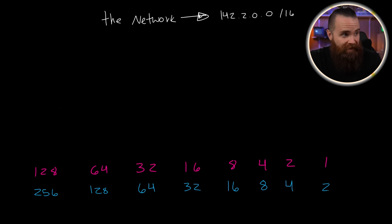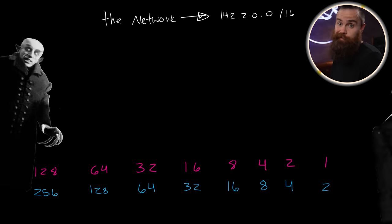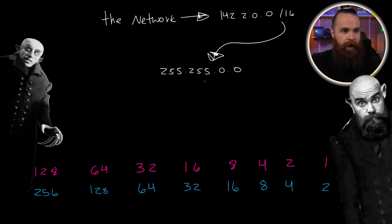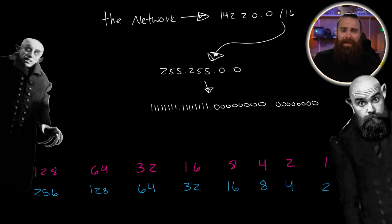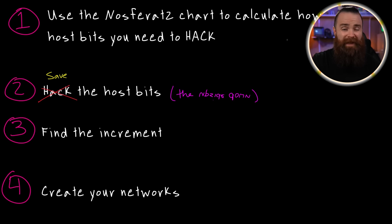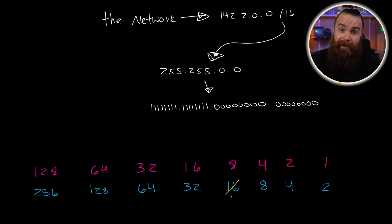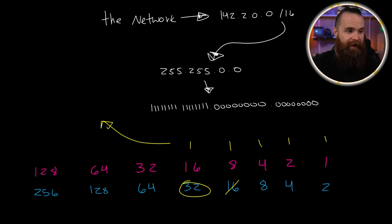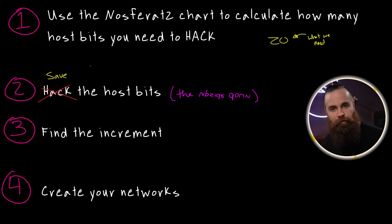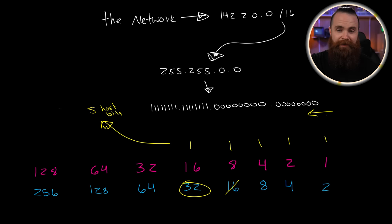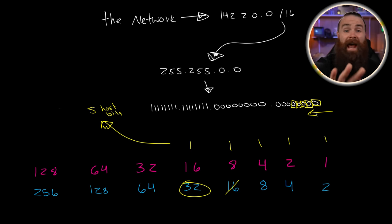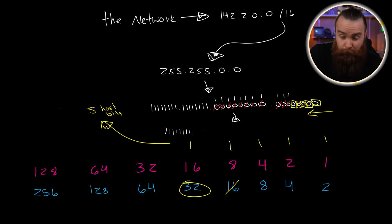Let's see how you did. Even though this is a class B address, it'll be easy as long as we have our Nosferatu chart. Slash 16 in decimal looks like this — and in binary, that's a lot of host bits. We need at least 20 IP addresses, 20 hosts. Looking at our Nosferatu chart, 16 is not enough but 32 works. It took five bits to get to 32. We're going to reserve five host bits starting from the right — one, two, three, four, five. Those are ours. Network, you can have the rest. The network is hungry — it's going to hack them all.